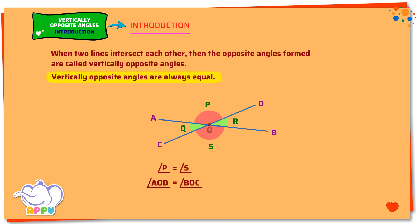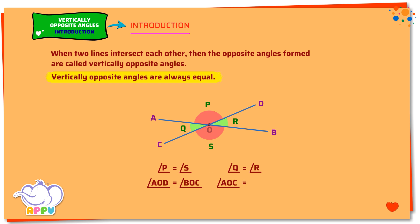Angle Q and angle R are another pair of vertically opposite angles. Angle Q equals angle R. This is the same as angle AOC equals angle DOB.